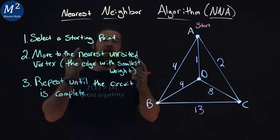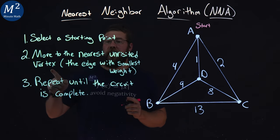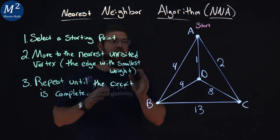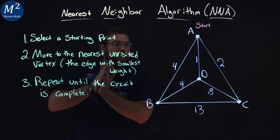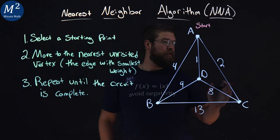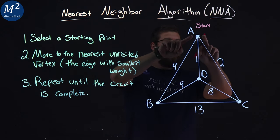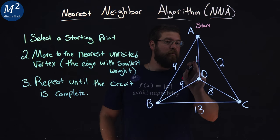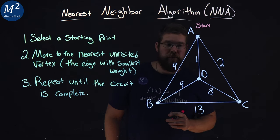Then it tells us to move to the nearest unvisited vertex, the edge with the smallest weight. So the nearest, the edge with the smallest weight. If you look at all the edges that come from A, we have A to B has a weight of 4, A to D weight of 1, A to C weight of 2.